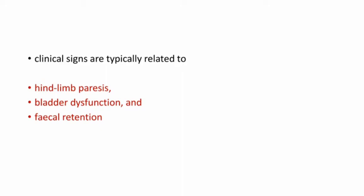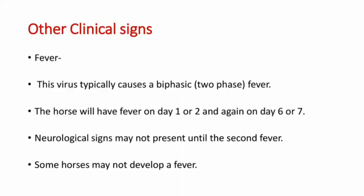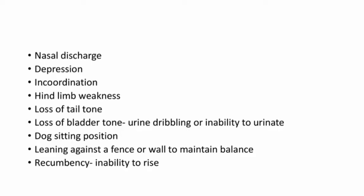Other clinical signs include fever, and this virus usually causes a biphasic or two-phase fever. The horse will have fever on day 1 or 2, then no fever for a few days, and on day 6 or 7 fever returns. Neurological signs may not be present until the second fever, and some horses may not develop a fever at all. Other signs include nasal discharge, depression, incoordination, hind limb weakness, loss of tail tone, loss of bladder tone, dog-sitting position, leaning against a fence or wall to maintain balance, and recumbency or inability to rise.